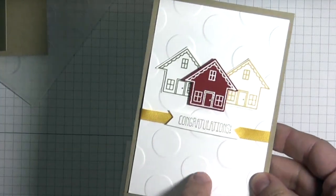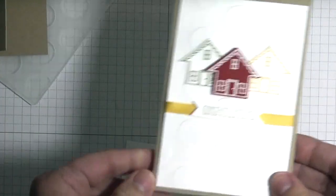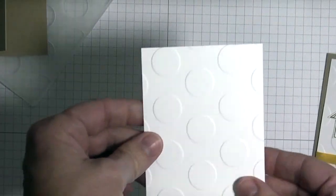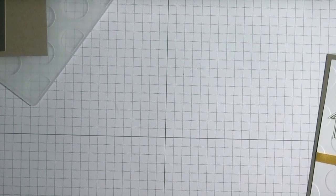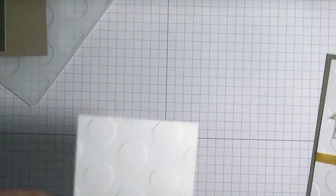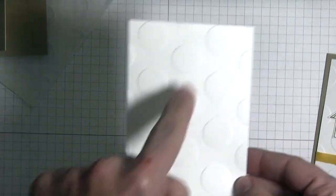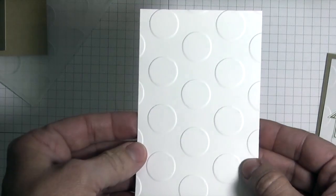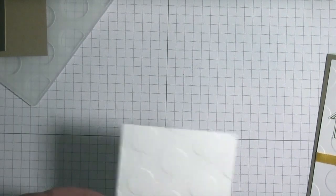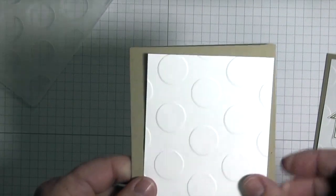This panel is a little bit larger. I wanted to make it smaller, so I cut this down to three by four and a half. I already ran it through my texture boutique using the large polka dots embossing folder.